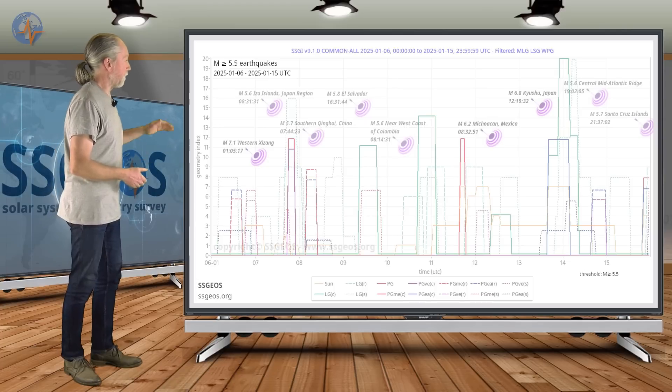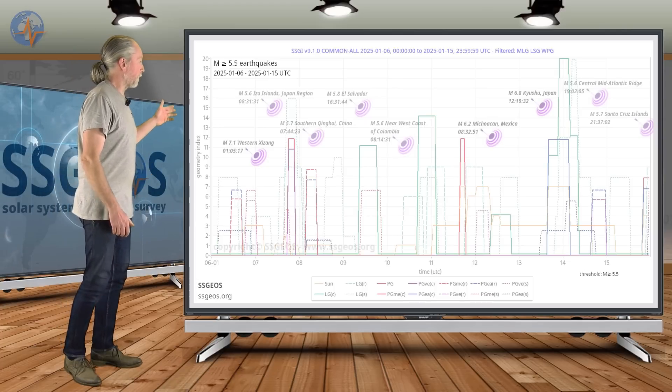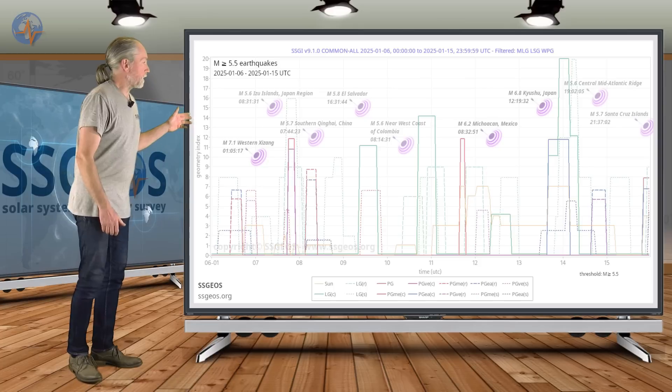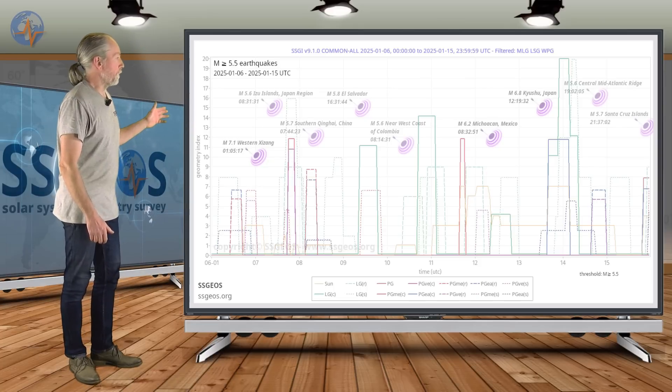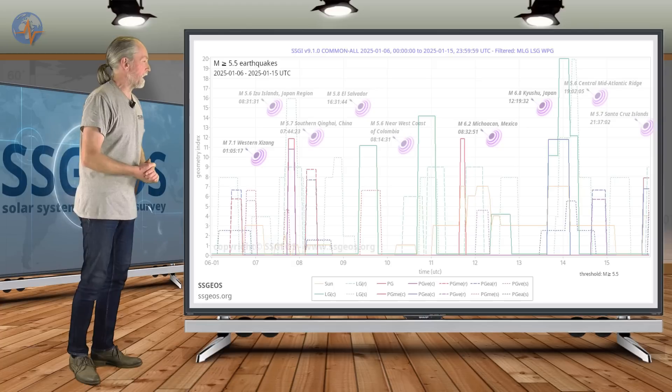We see higher five magnitude earthquakes with the critical geometry on the 7th, 8th and also around the full moon, following the full moon 5.6, 5.7.